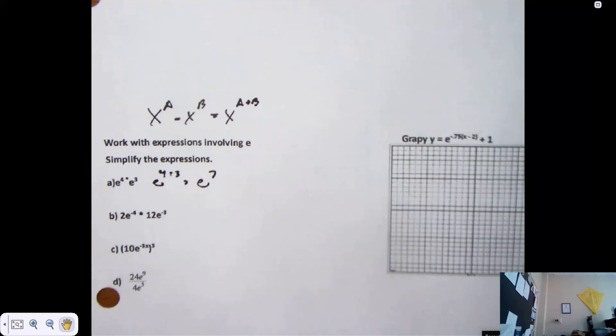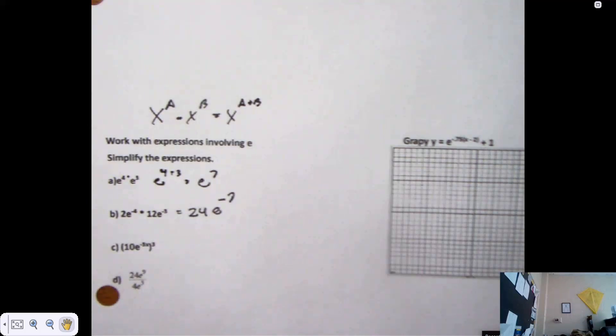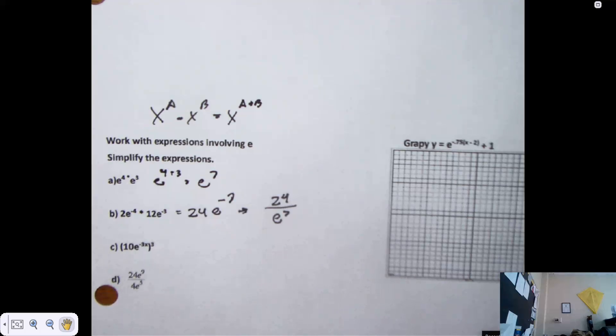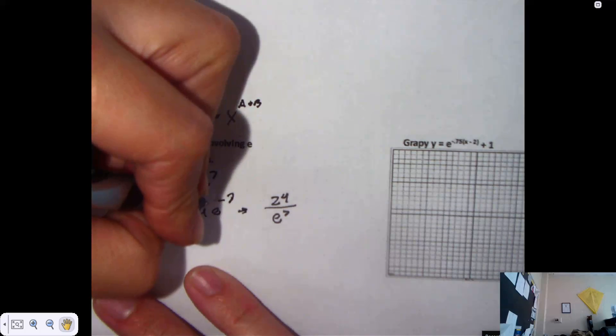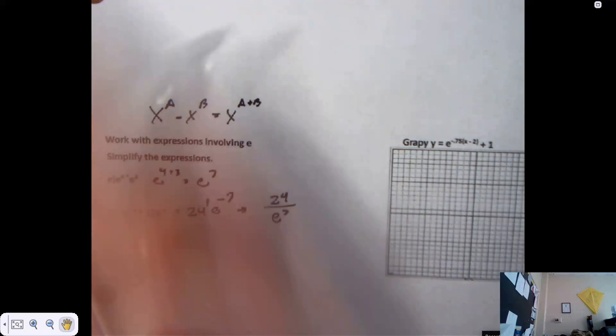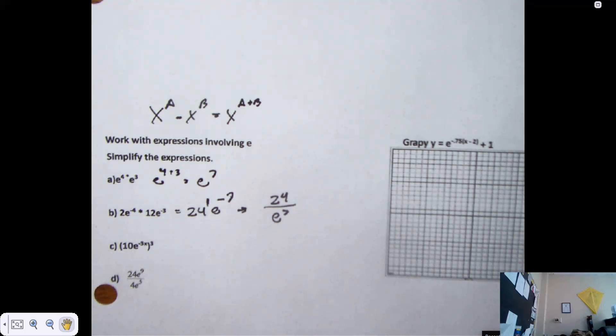Alright, how about twice E to the 4th power times 12E to the negative 3rd power? That is 24E to the negative 7. We are allowed to multiply the numbers themselves. And I would still count this wrong. 24 over E to the 7th. Nope. 24E to the 1. Only the E has the negative exponent. Only the E moves.